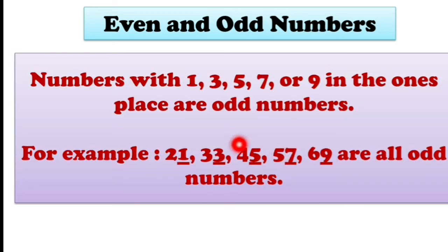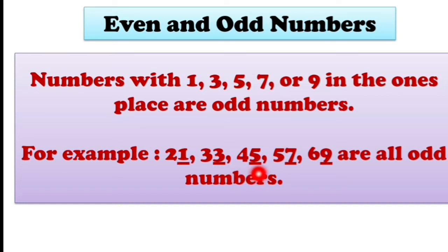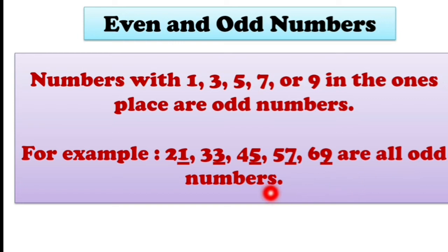Now, what are odd numbers? Numbers with 1, 3, 5, 7, or 9 in the ones place are odd numbers. Numbers whose ones place has 1, 3, 5, 7, or 9 are called odd numbers. For example: 21 — ones place is 1; 33 — ones place is 3; 45 — ones place is 5; 57 — ones place is 7; 69 — ones place is 9. Their ones place has 1, 3, 5, 7, 9, so these are odd numbers.